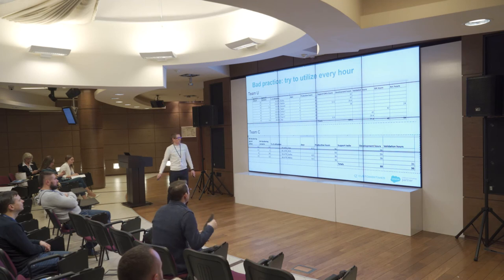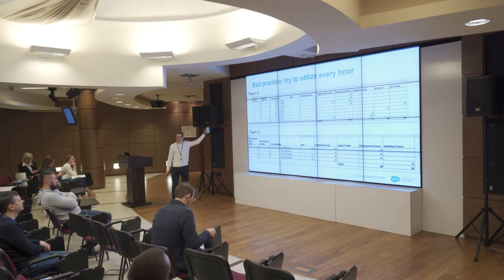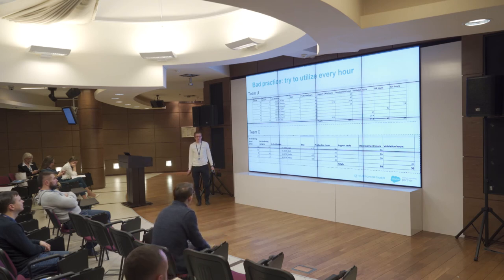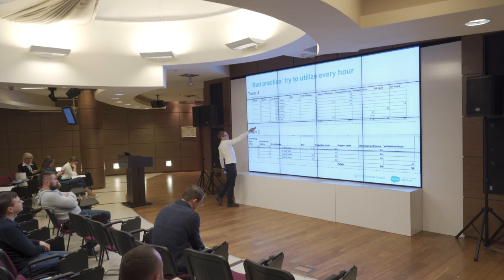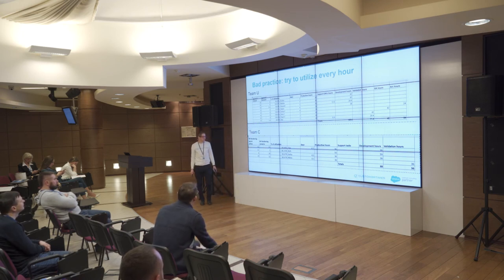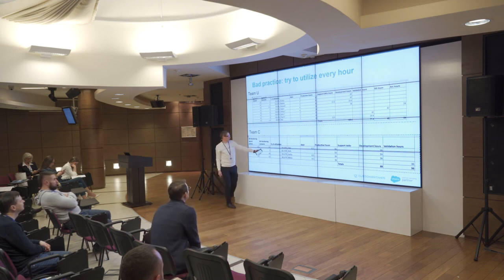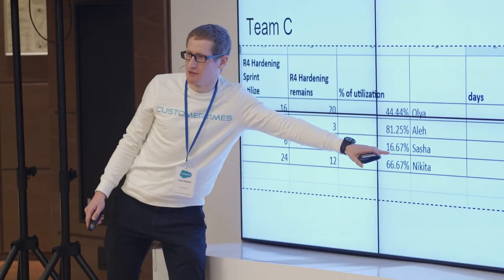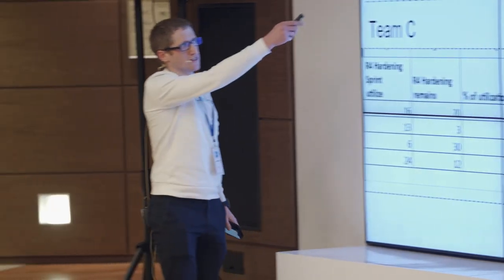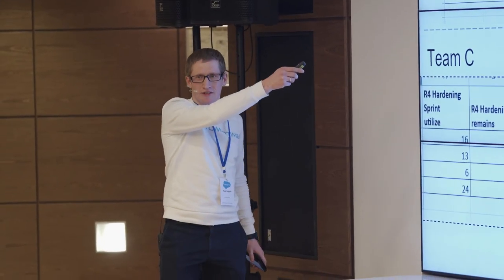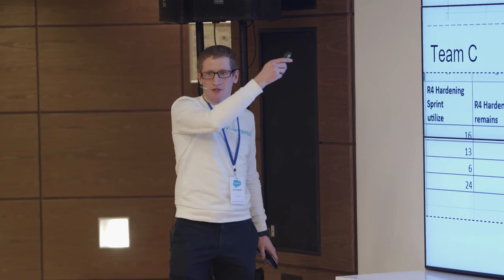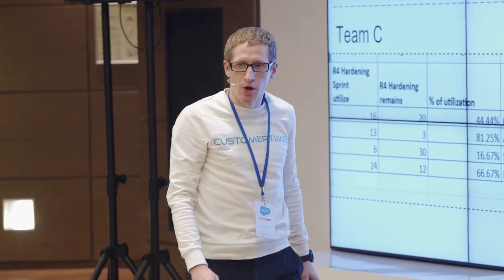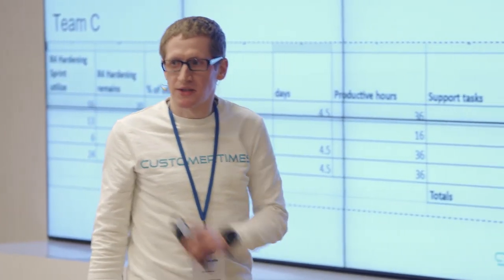We can observe a real case from my two teams — I call them Team U and Team C. One plan has almost 100% utilization for all team members. The other utilized only 44% to 16% per developer. The over-utilized team didn't deliver on time because of dependencies, lack of requirements, and implementation issues. But the team with lower utilization — that's actually the very good team.